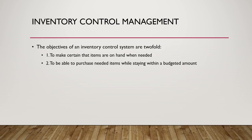The objectives of an inventory control system are twofold: first, make certain that items are on hand when they're needed — if we don't have it, we can't use it for an animal or sell it to a client. Second, we need to purchase needed items while staying within a budgeted amount. You need to know what the budget is and make good choices to stay within it.